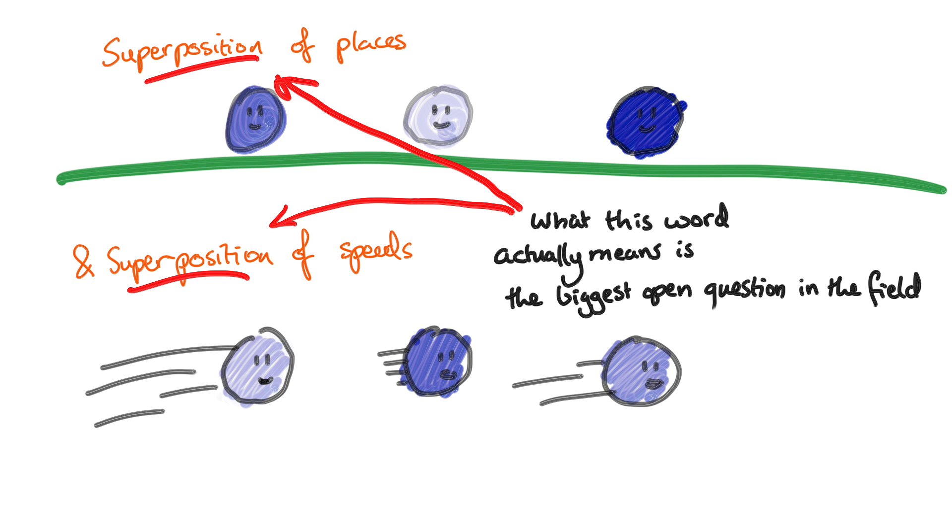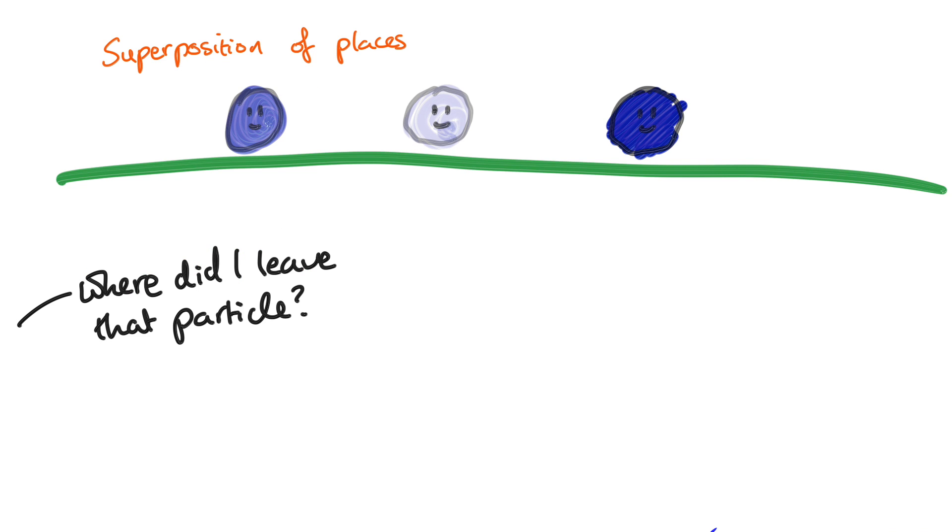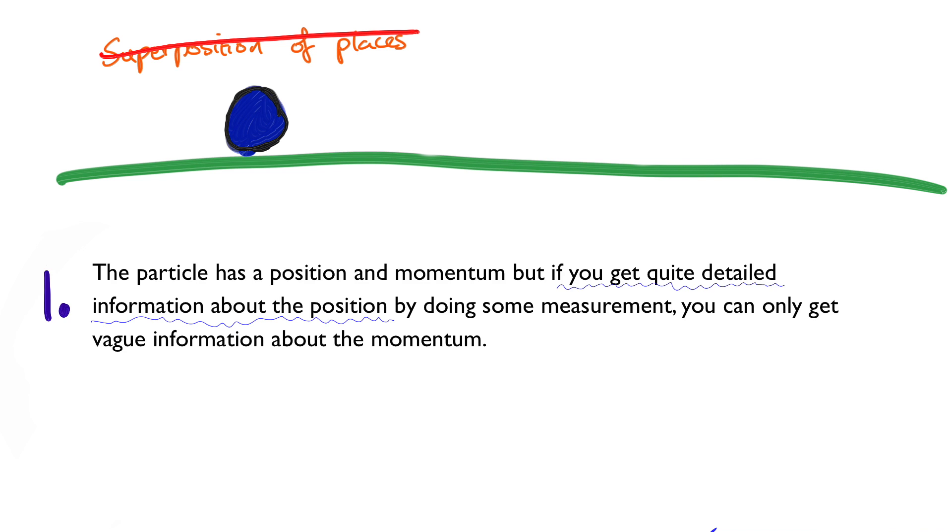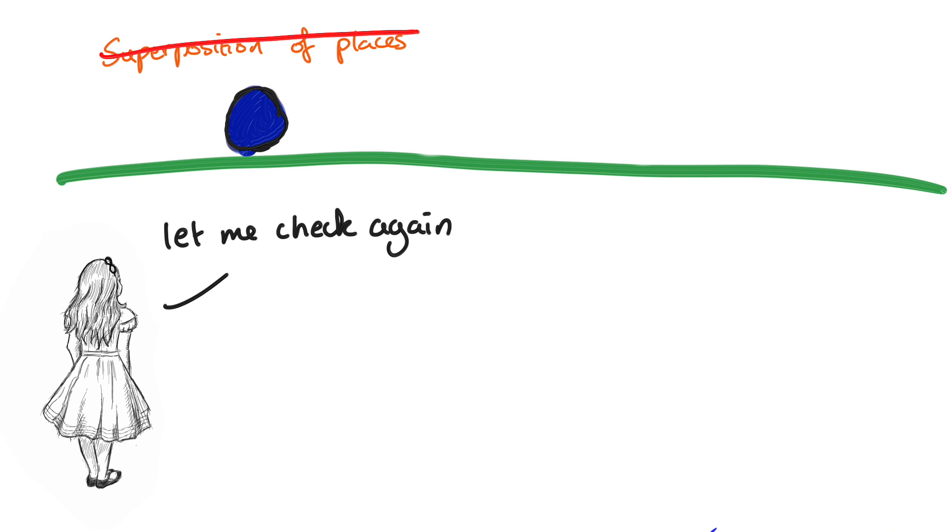But say you do go to measure it. You can only measure one thing about the particle, so let's say you're measuring the position. You're not going to see it in all of these places. It will just be in one, and it will pick which one randomly. And so that's one reason the first answer is wrong. When you measure a particle, it doesn't tell you some range of places or any other information about where it is. It just turns up in one single place. And what's worse is you can't measure it again and hope to see all these other spots.